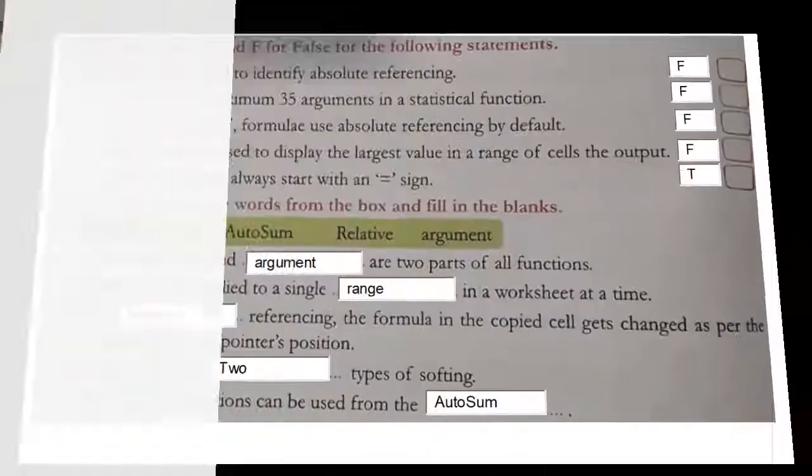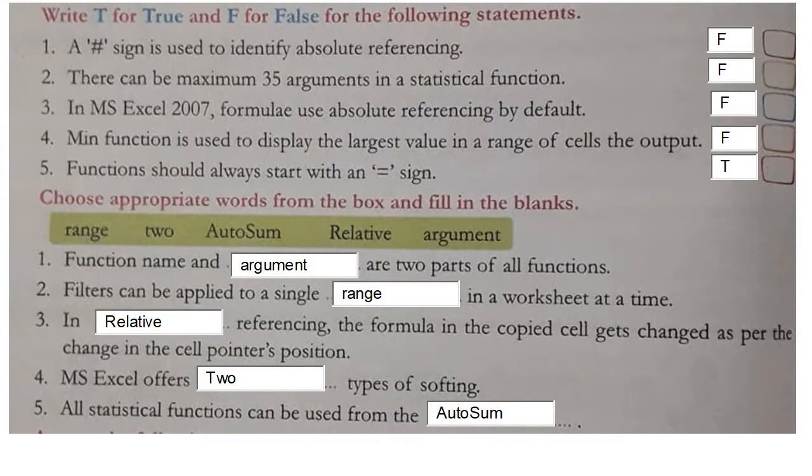Write T for true and F for false for the following statements. Number one: a hash sign is used to identify absolute referencing - false. Second: there can be maximum 35 arguments in a statistical function - false, it's 30 arguments. Third: in MS Excel 2007, formulas use absolute reference by default - false.